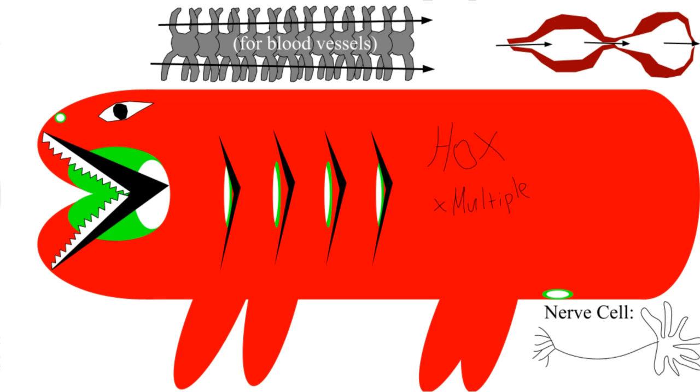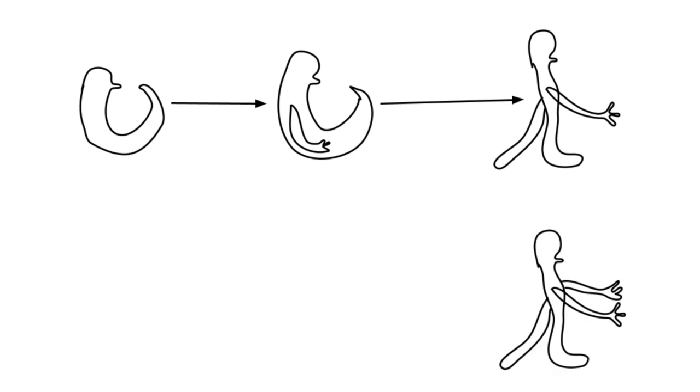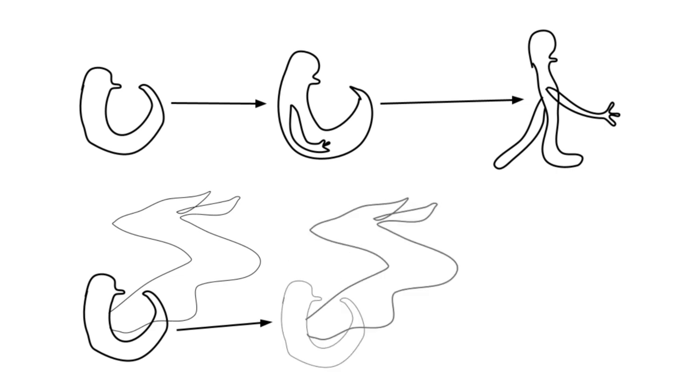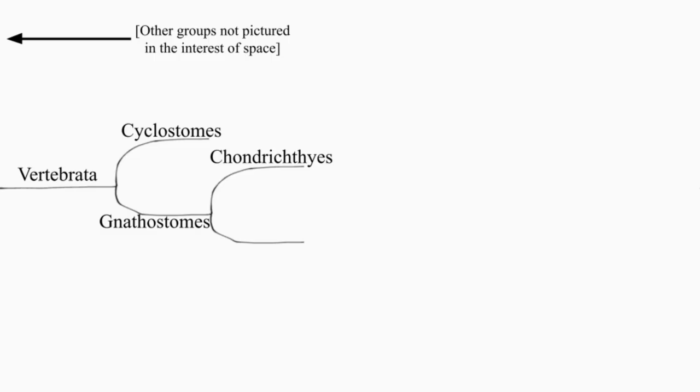So what do the hox do exactly? Well, evolutionary speed is hampered by the fact that if you change something up too much, it's going to mess with the development stages, and the hox genes help counterbalance that by organizing everything. In other words, gnathostomes can diversify much faster. The gnathostomes divide into cartilage fish and bone fish.